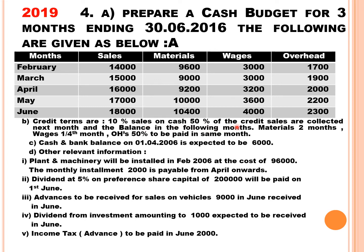So, 90% credit sales: 50% will be received next month and another 50% in the following month. For example, if total sales is Rs. 100, then 10% (Rs. 10) is cash received in the same month. The remaining 90% is credit sales — 45% will be received next month and another 45% in the following month.